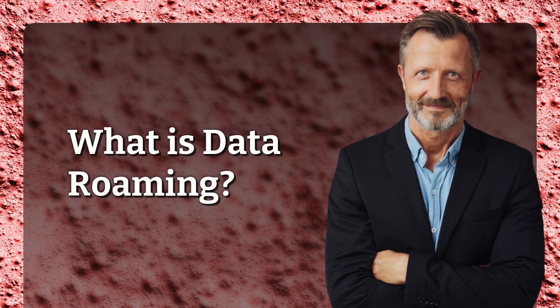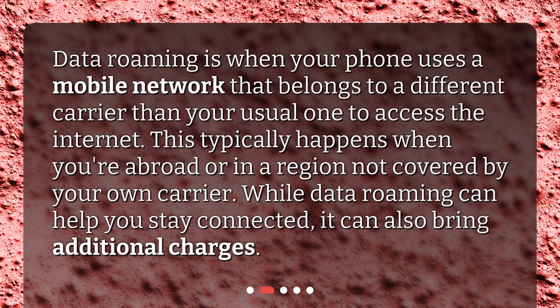What is data roaming? Data roaming is when your phone uses a mobile network that belongs to a different carrier than your usual one to access the internet. This typically happens when you're abroad or in a region not covered by your own carrier. While data roaming can help you stay connected, it can also bring additional charges.